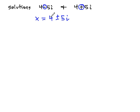Let's isolate that plus or minus term by getting rid of the 4, and we can do that by subtracting 4 from both sides. This gives us x minus 4 equals plus or minus 5i.